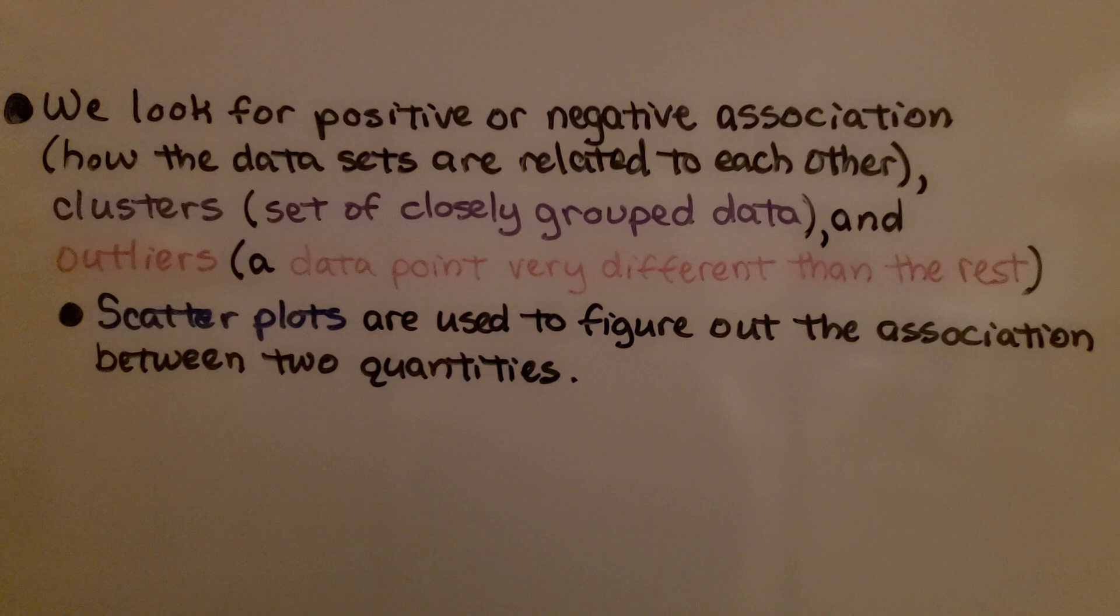We look for positive or negative association. That's how the data sets are related to each other. Clusters are sets of closely grouped data, and outliers are data points very different than the rest. Scatter plots are used to figure out the association between two quantities.